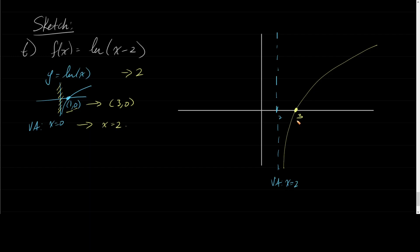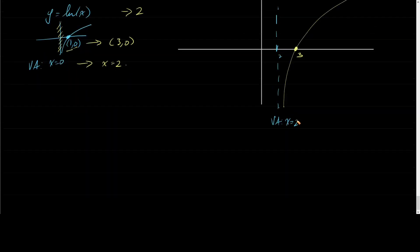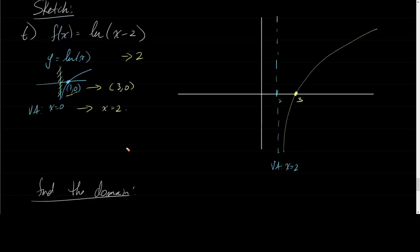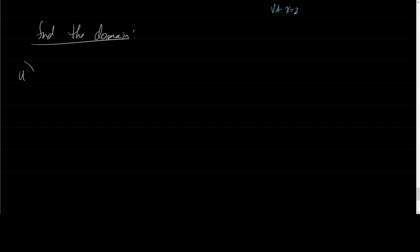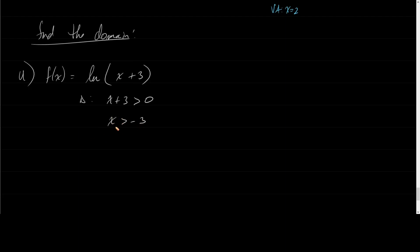Let's talk about finding domains. Let's say f of x equals ln of x plus 3. This tells us that x plus 3 must be greater than 0. So x must be greater than negative 3. That's our domain — from negative 3 to infinity.